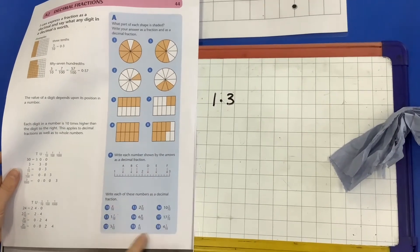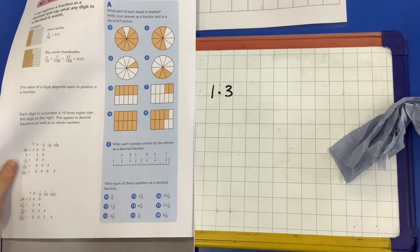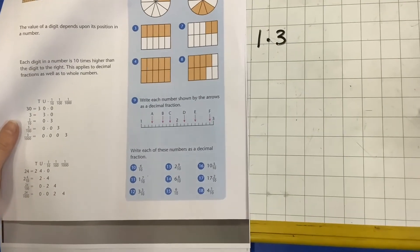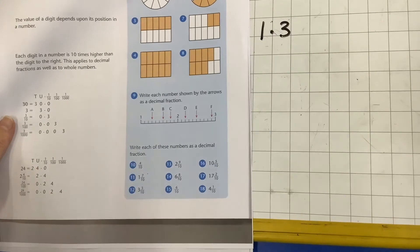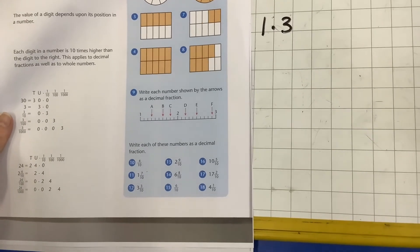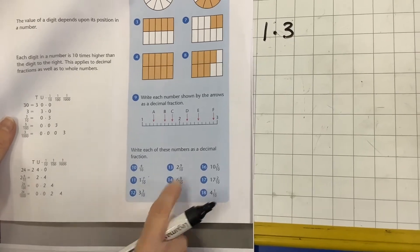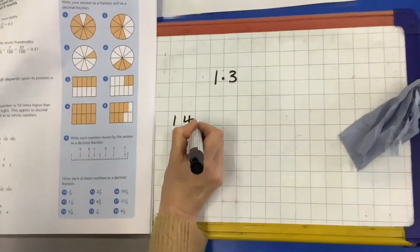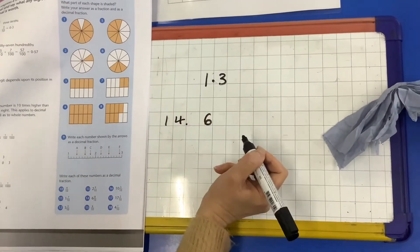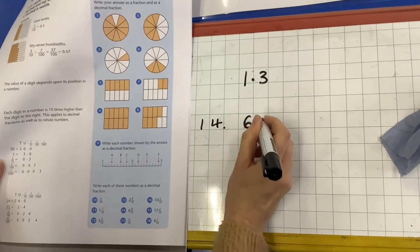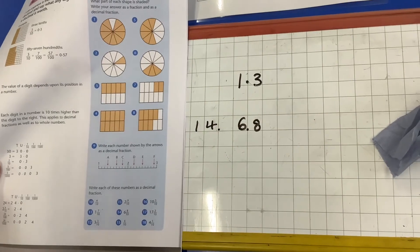And then if you come down to this bottom part, you have to do all of those. If you come down to the bottom part here, 4 tenths isn't too tricky. I'm going to jump, I'm going to have a look at, what about this one? 6 and 8 tenths, number 14. Let's have a look. How am I going to write that as a decimal? 6.8.